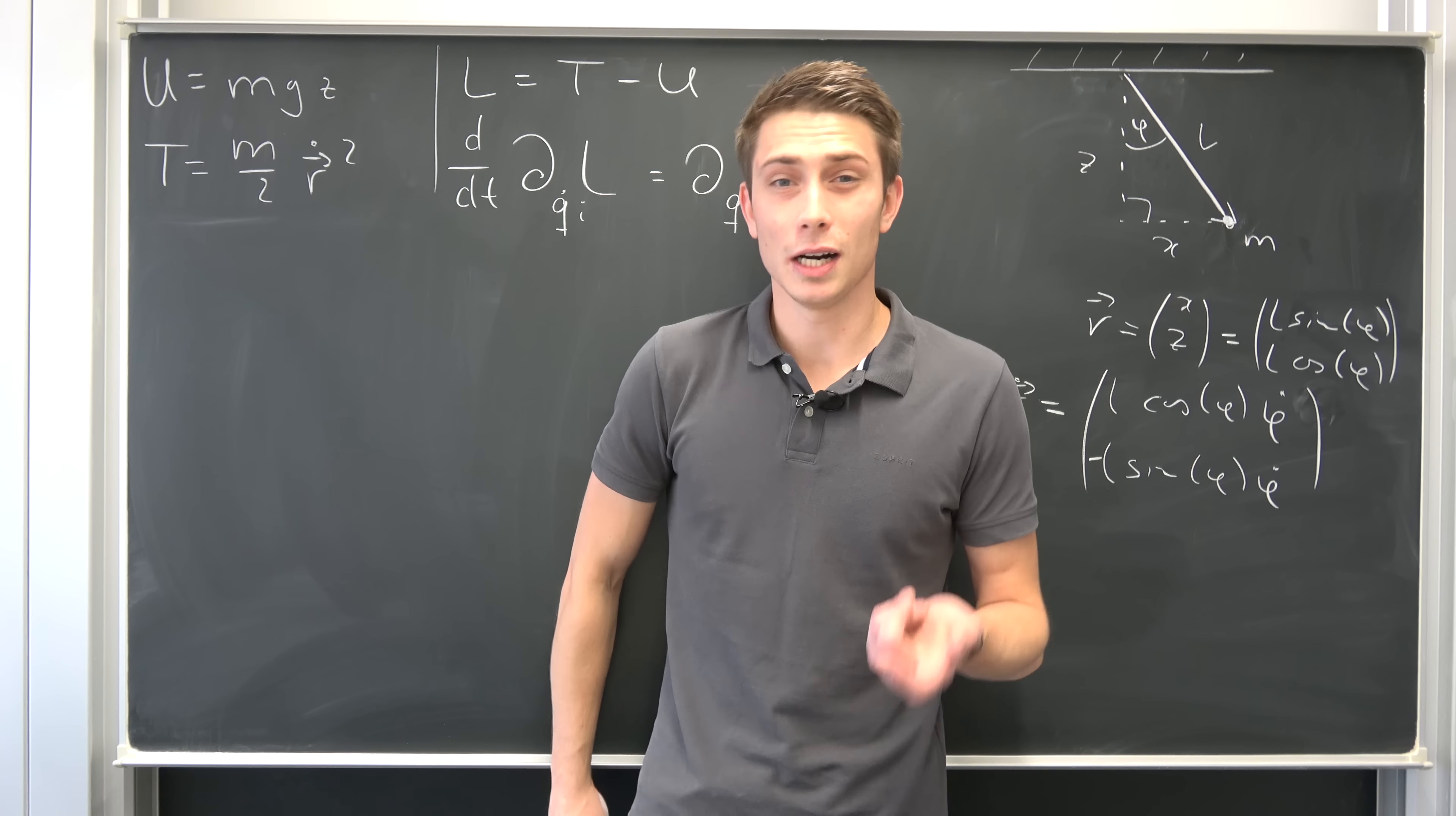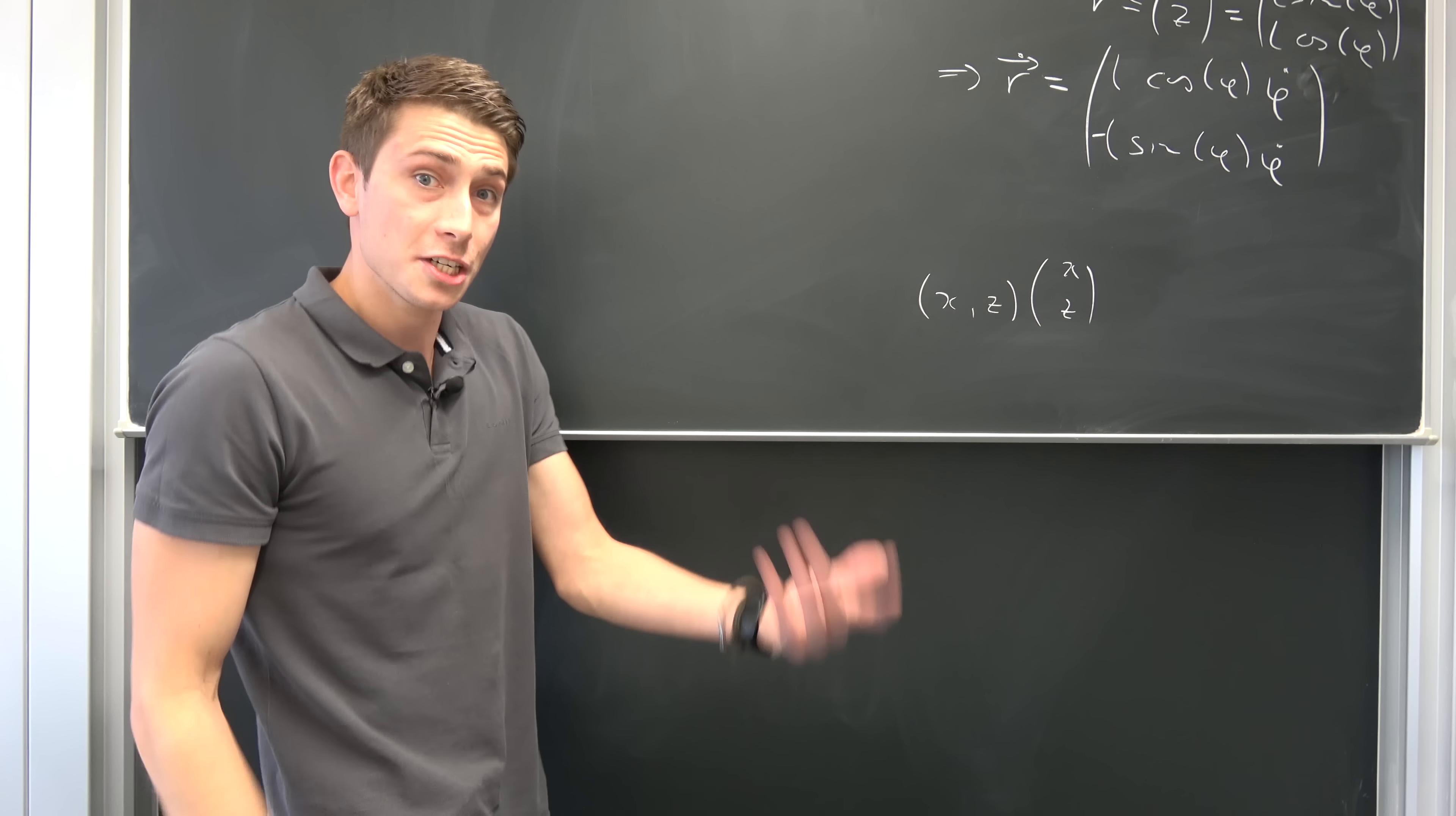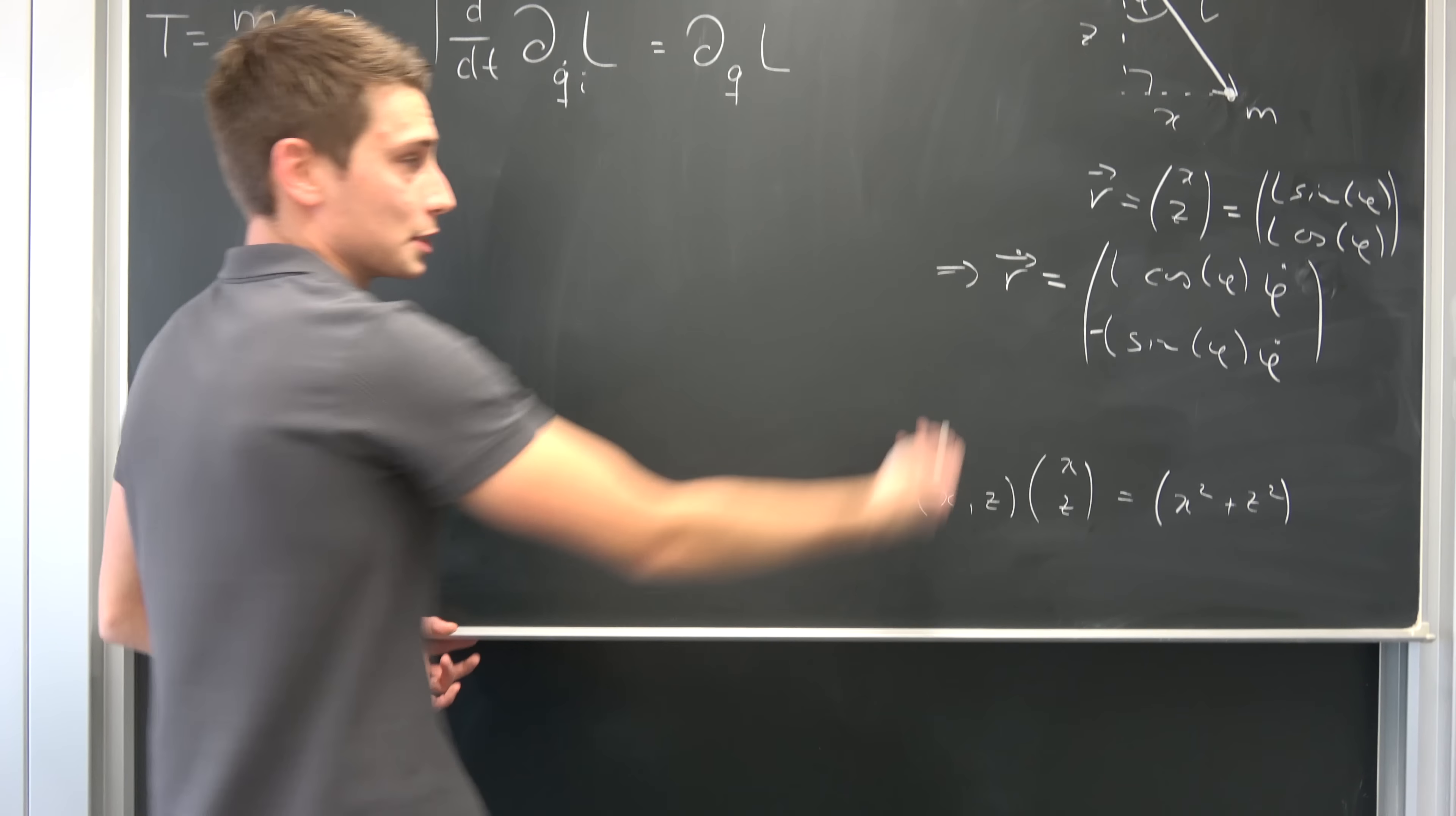But we have to square it now. How can you imagine a vector being squared? Well, if we take this vector for example down here and we square it, this is the same as transposing this first vector x and z and multiplying it with x and z. You can imagine this like matrix multiplication, taking this vector, putting it up here, multiplying component-wise and adding those multiplications together. So in the end we would have x squared plus z squared. Let's go ahead and do this with this r dot vector.